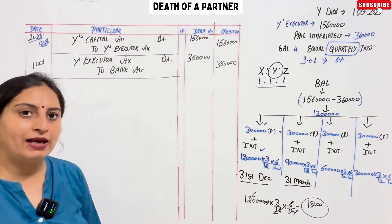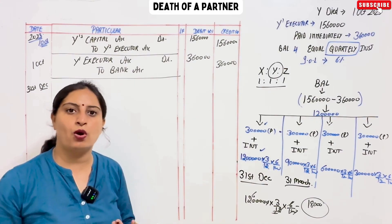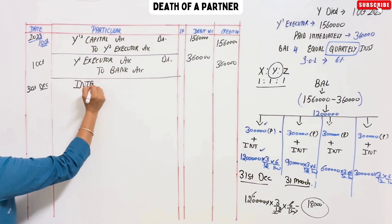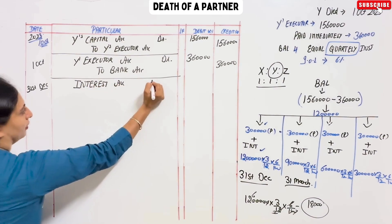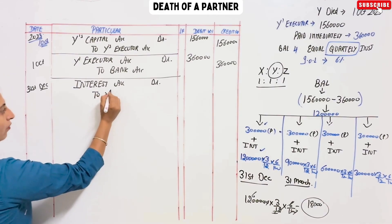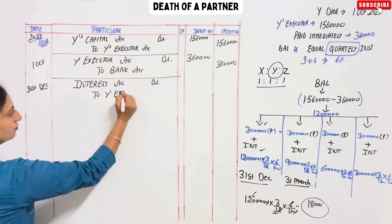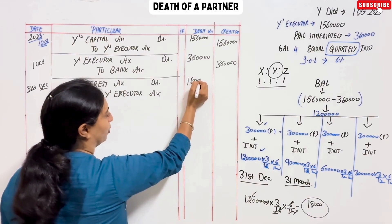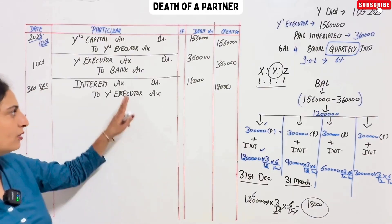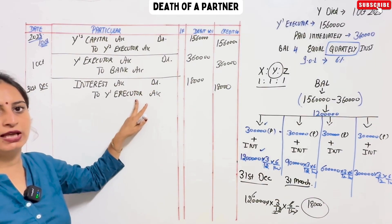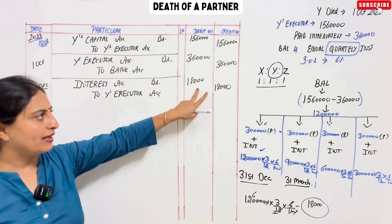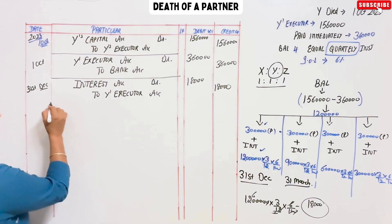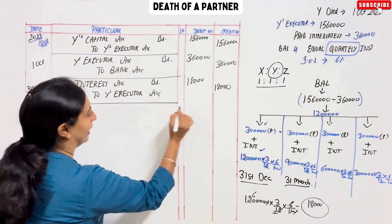So we calculate: 12 lakh × 6/100 × 3/12 = 18,000. So our first interest is 18,000. Interest is an expense — debit. Interest account debit, by Y Executor — 18,000. Because the interest is due, our expenses are debited. The executor will receive it. The installment is 3 lakh plus 18,000 interest, so total payment on 31st December is 3,18,000.